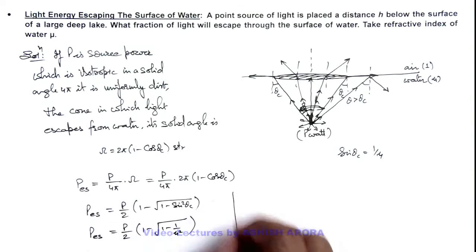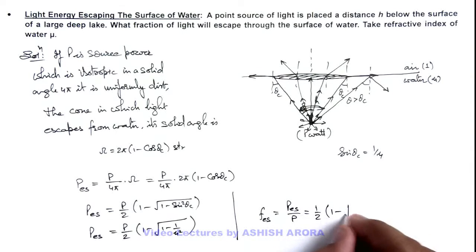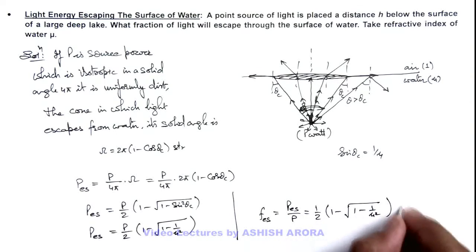And if we calculate the fraction of light energy which is escaping, it can be written as escaping power by P. So this is 1 by 2 times (1 - √(1 - 1/μ²)), that is the final result of this problem.